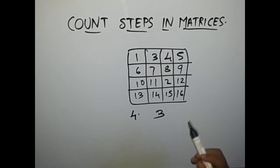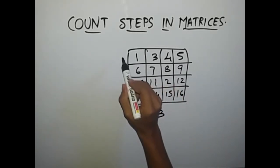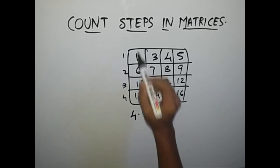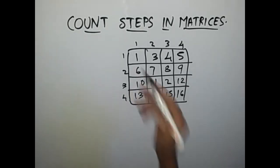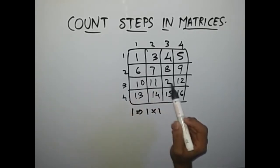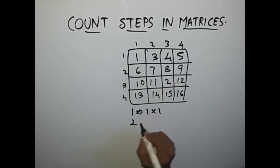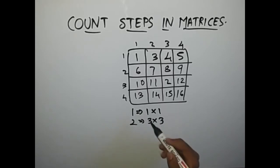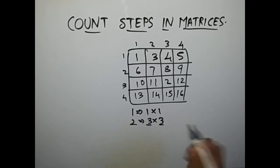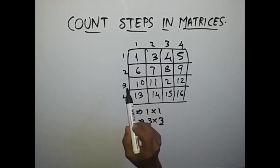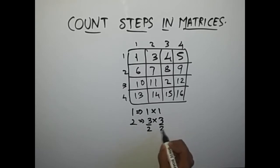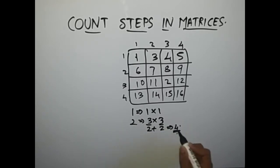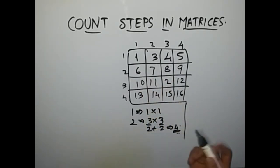All we have to do is find a pattern in how the numbers are arranged. This is row 1, row 2, row 3, row 4, column 1, column 2, 3, 4. Now 1 is present at position row 1, column 1, and element 2 is present at row 3, column 3. We find the difference between the rows and the columns. The row difference is 2 and the column difference is 2 — adding them gives 4. So we require 4 steps to travel from 1 to 2.